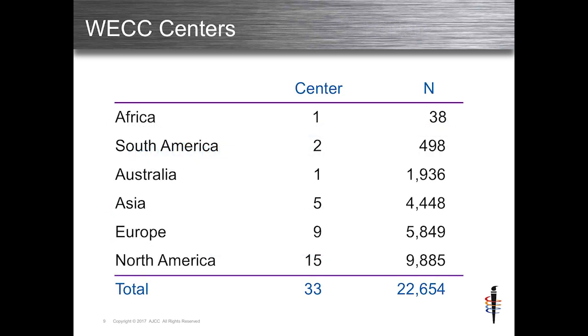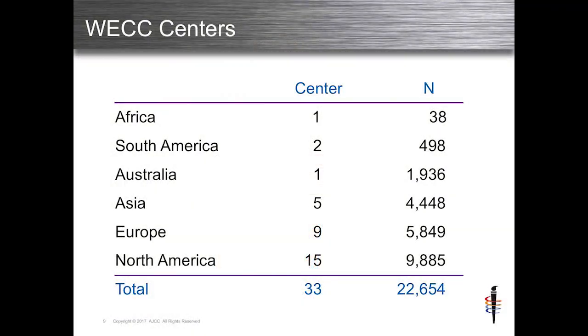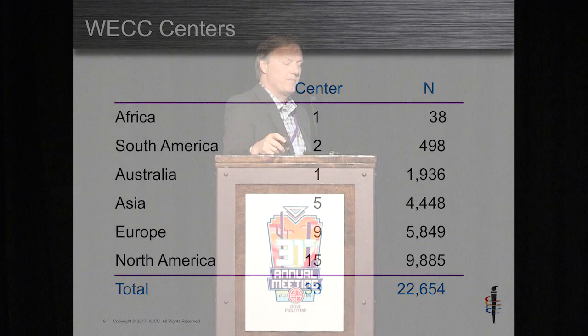This is what the WECC data looked like — data from all over the world, ultimately 22,000 evaluable patients. The difference from AJCC 7th edition is that the 7th was purely pathologic staging, only 4,000 patients, mostly from the US and Europe. There is a definite lack of Asian data, and there were no clinically staged patients in the last database. I'm not saying this database is perfect, and I'm hoping someone will probe me about its weaknesses and biases.